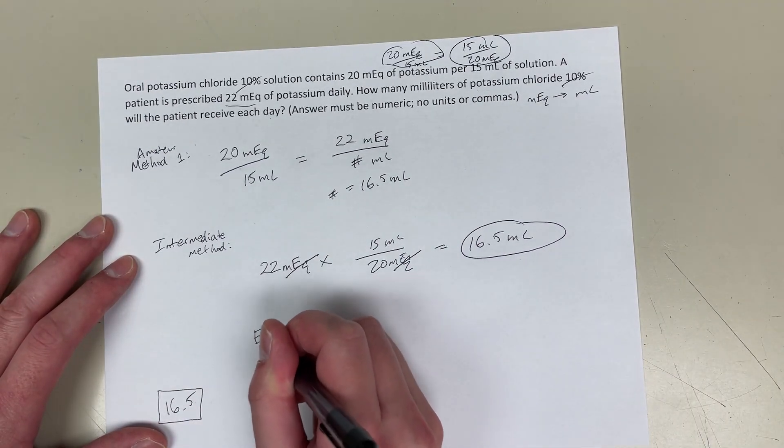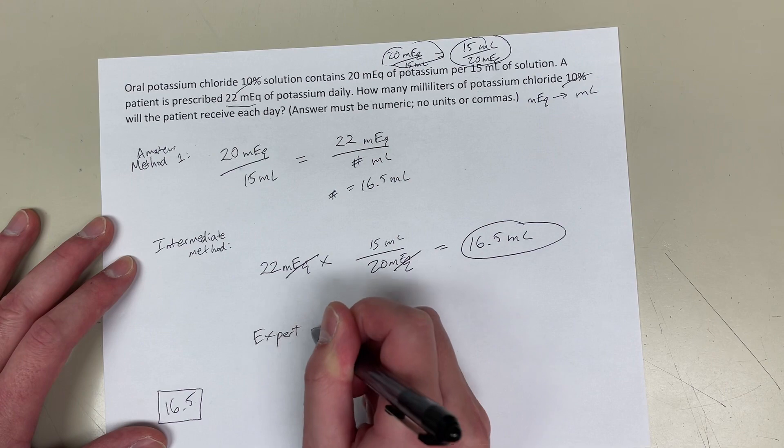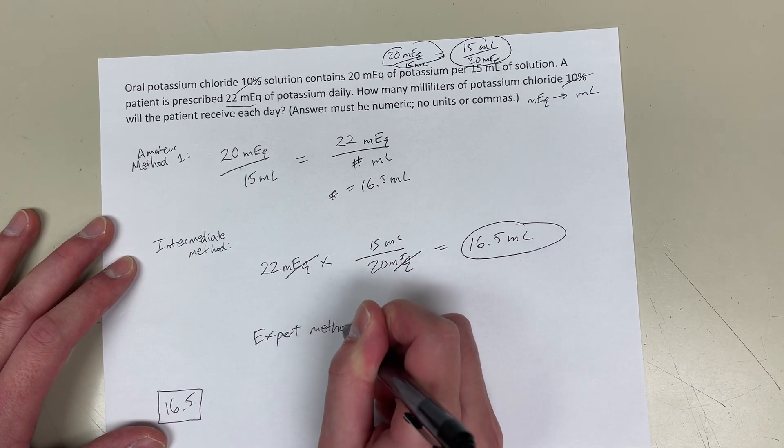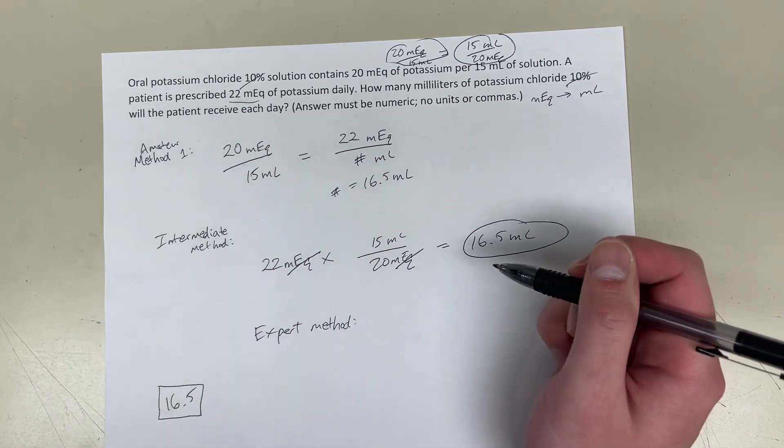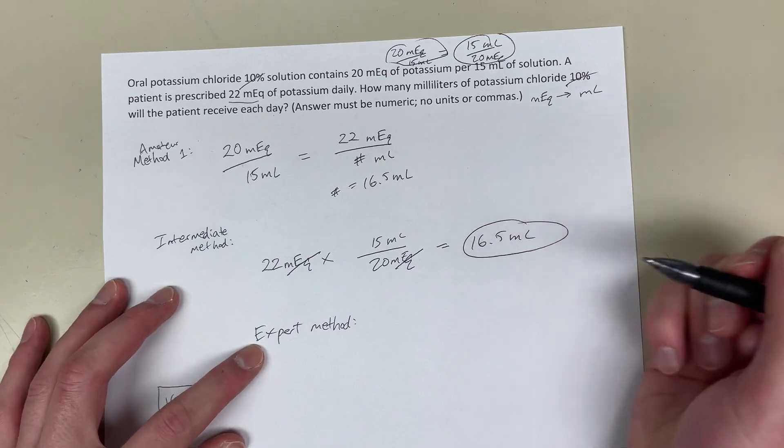And now I'm going to show you the third method, which is the expert method, which people who are really good at math do normally. So, normally they do this in their head.